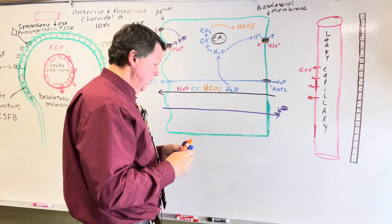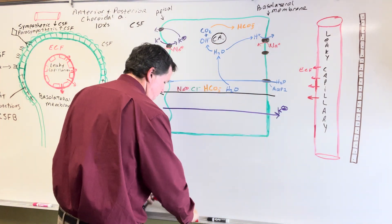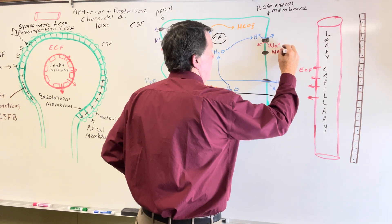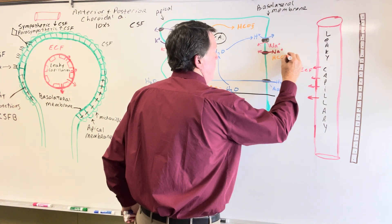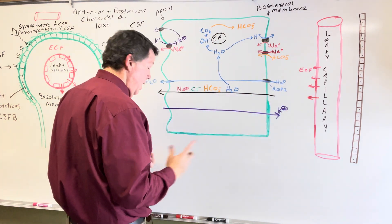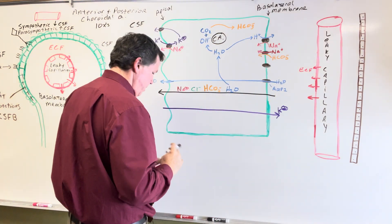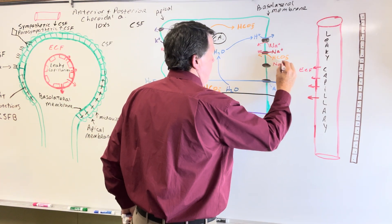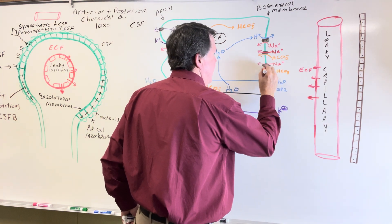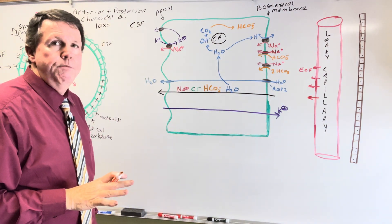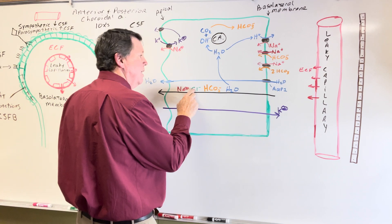There's another co-transporter on the basolateral membrane where sodium can come in together with bicarbonate. There's also another protein that brings sodium in, but this one requires two bicarbonates to come in along with it. So we're accumulating bicarbonates inside the cell. Now let's talk about chloride and how it gets into the cell.